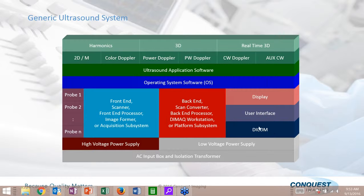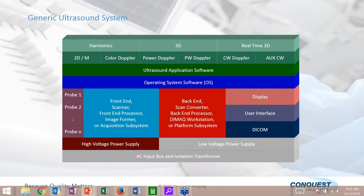Ultrasound systems also have various options, much like a pizza — you start with the basic model and then order toppings. Ultrasound systems have a variety of options you can add to them. The front end of an ultrasound system includes a probe interface — the board into which you plug your transducer — and a transmitter that generates the high voltage pulses.